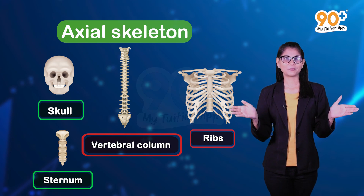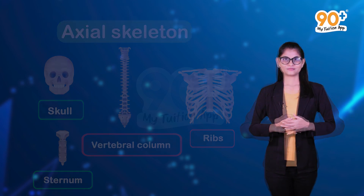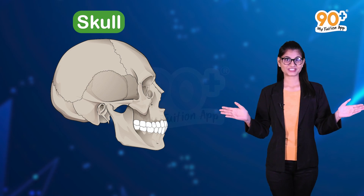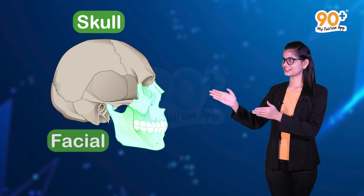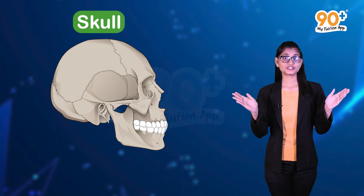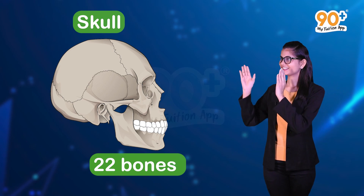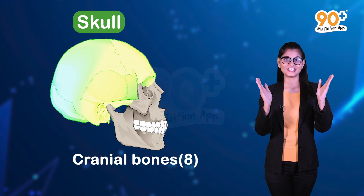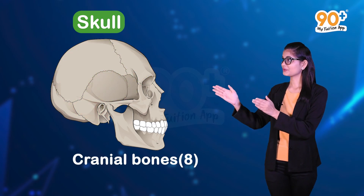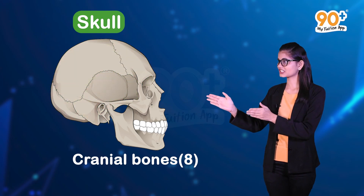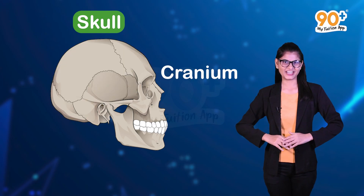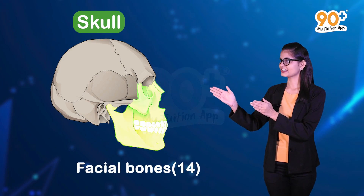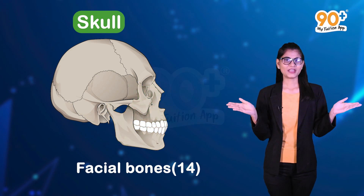The skull is composed of two sets of bones — cranial and facial bones. In total, there are 22 bones that come under the skull. Cranial bones alone number 8, and they form a hard protective outer covering called the cranium for the brain, while the facial region is made up of 14 skeletal elements which make up our face.